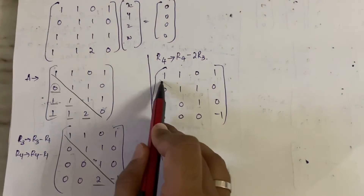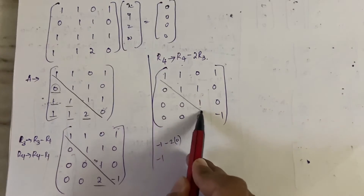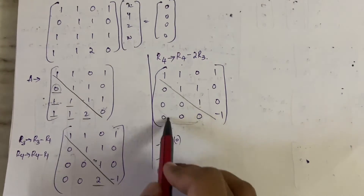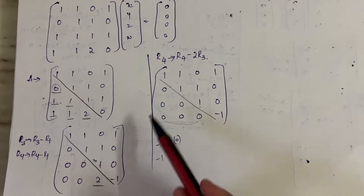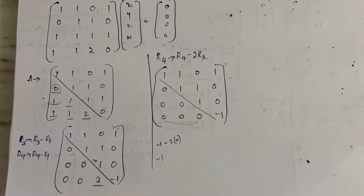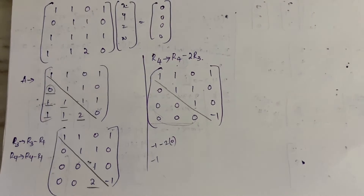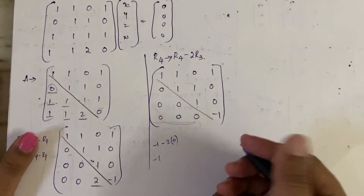The resulting matrix is [1, 1, 0, 1; 0, 1, 1, 0; 0, 0, 1, 0; 0, 0, 0, −1]. Looking at the diagonal, all elements below the diagonal are zero — we are done with the echelon form. We can stop here and move to the next step: identifying the rank of matrix A.